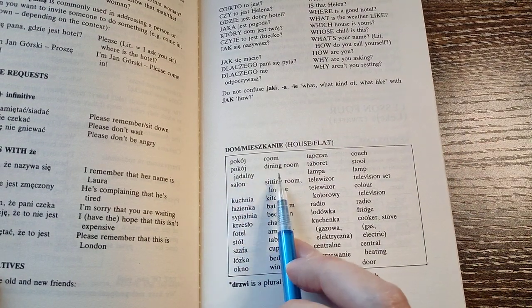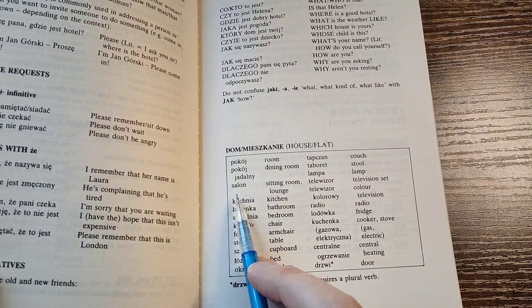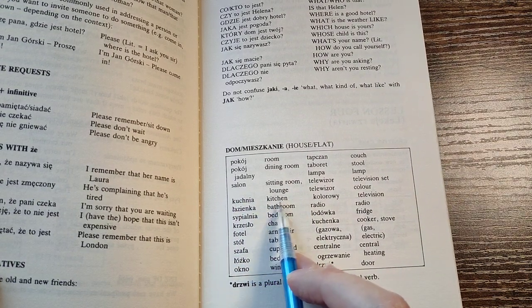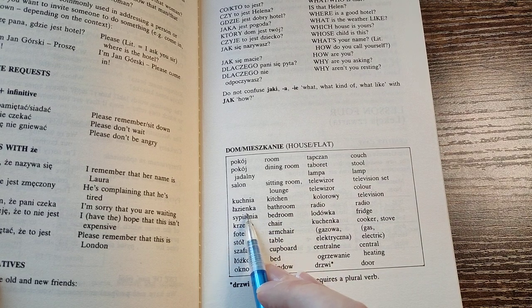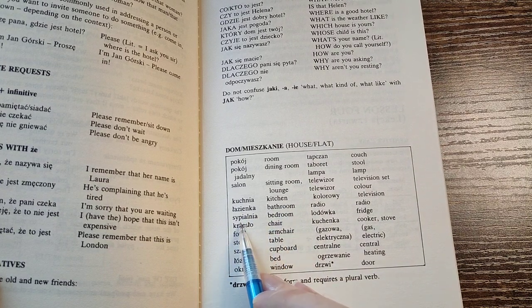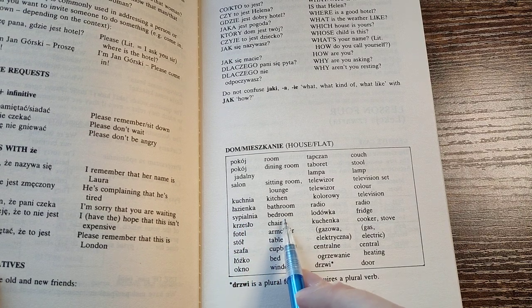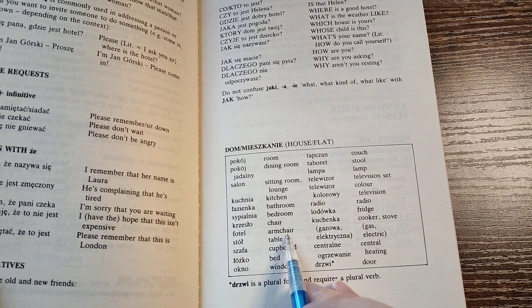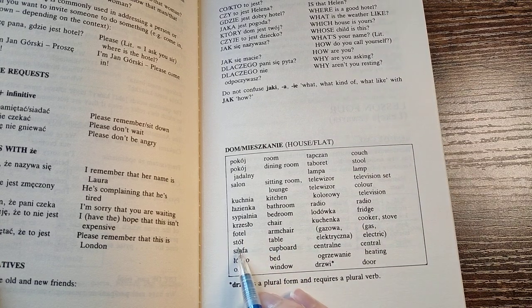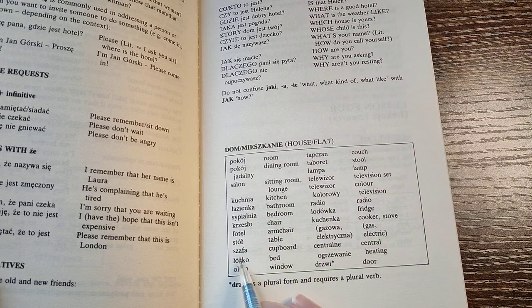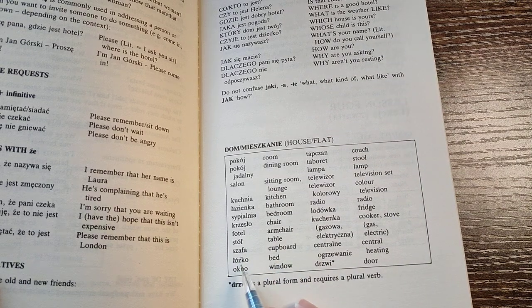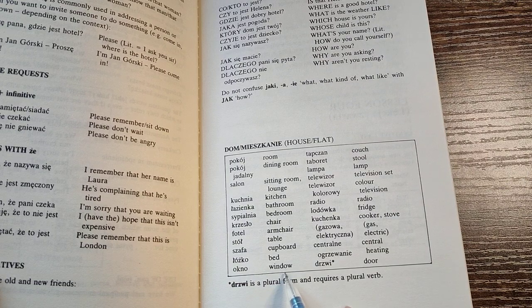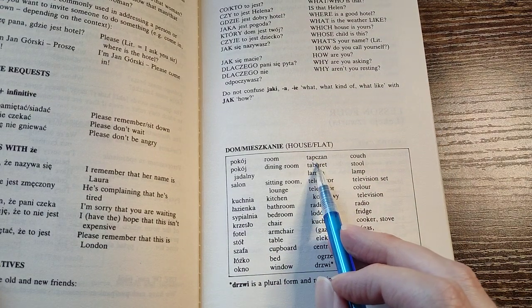It's a beautiful place. The dining room. The salon, the sitting room. The kitchen. The bathroom. The bedroom. The hotel. The arm chair. The table. The shelf. Rafa, cupboard. Luzko, bed. Okno, window.